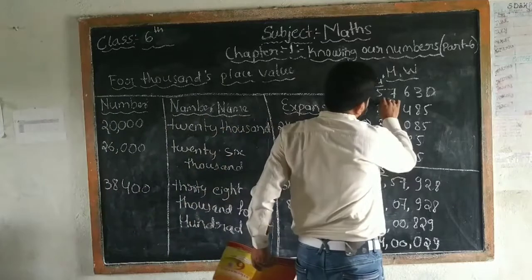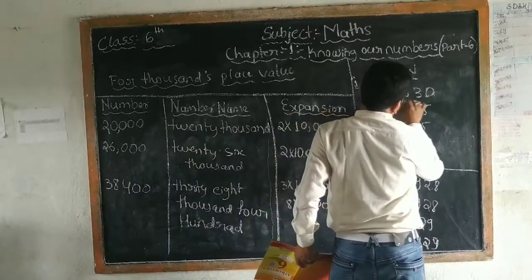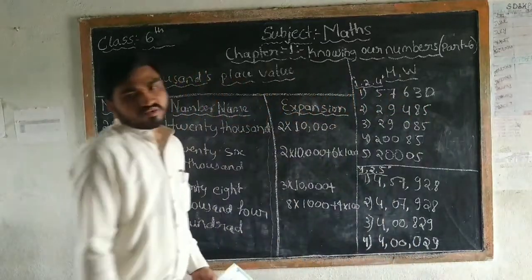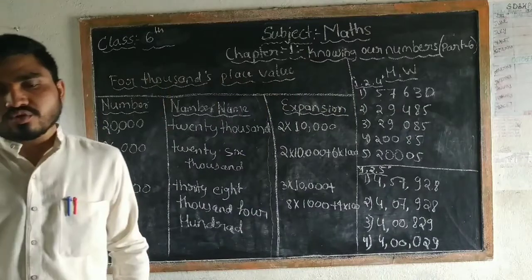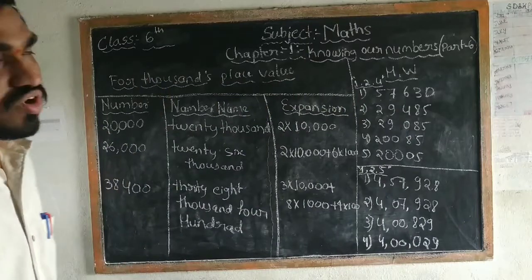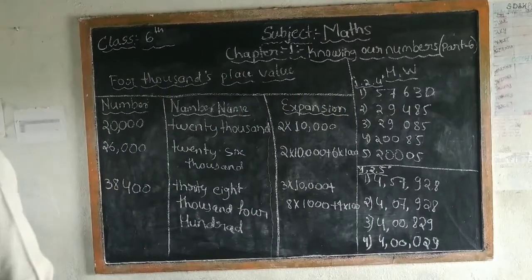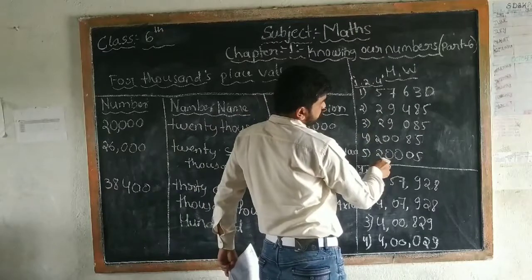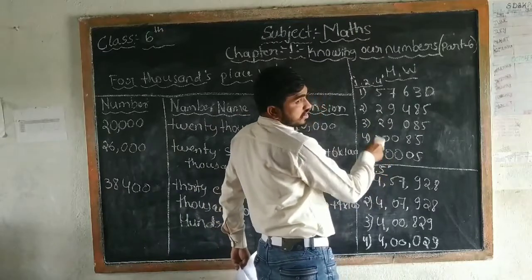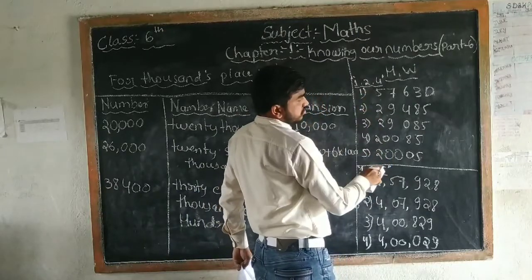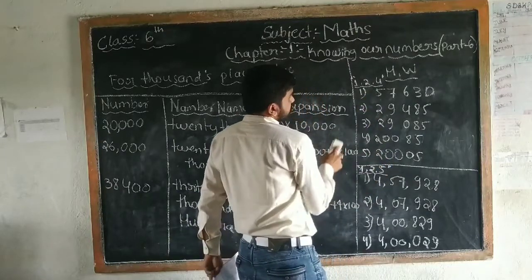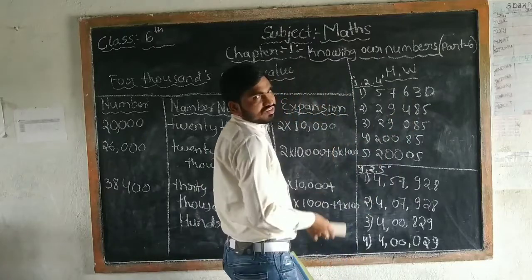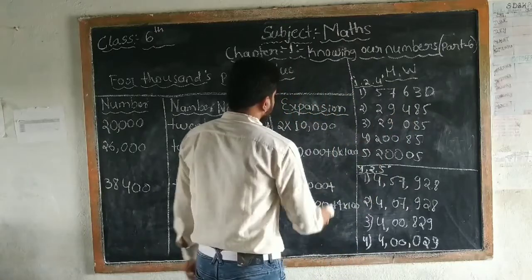I will do the next one — 57,630 — and remaining ones we have to do, 4 more. These are all 10,000 digits; these are all 5-digit numbers.